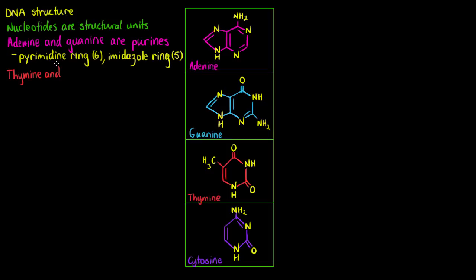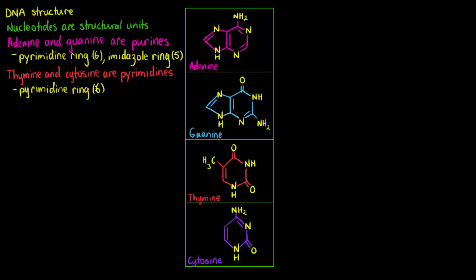When it comes to thymine and cytosine, we can see that they don't have that second ring structure. They only have the six-membered ring structure — that six-membered ring we just called a pyrimidine ring. So we refer to thymine and cytosine as pyrimidine bases, meaning they only have that six-sided pyrimidine ring.